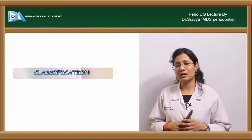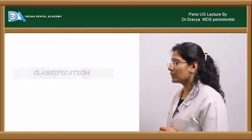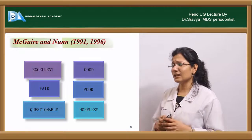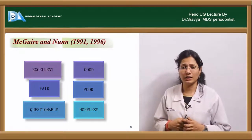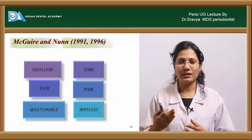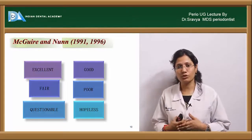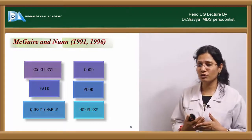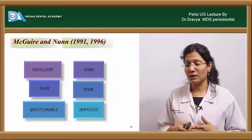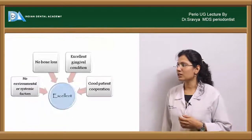Let's go into the classification of prognosis. It was McGuire and Nunn in 1991 and 1996 who classified prognosis as: excellent prognosis, good prognosis, fair prognosis, poor prognosis, and questionable and hopeless prognosis.